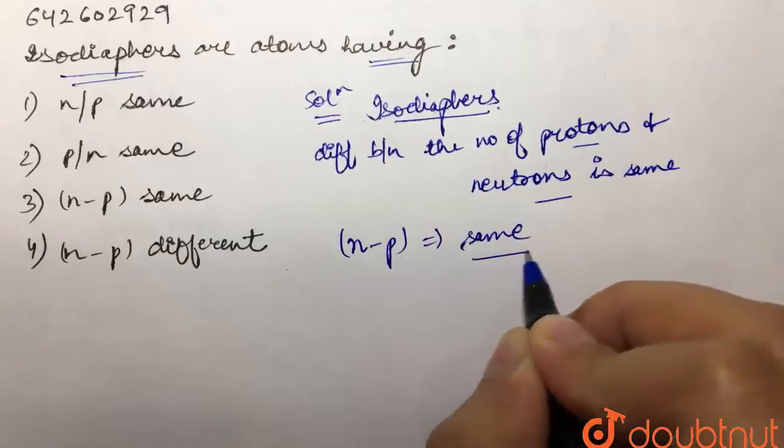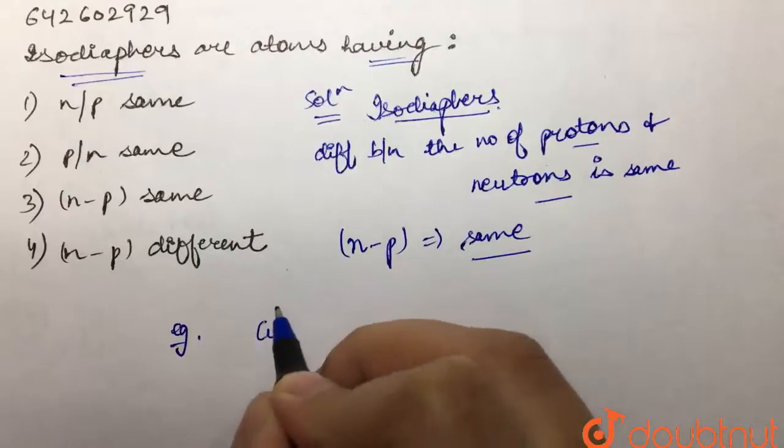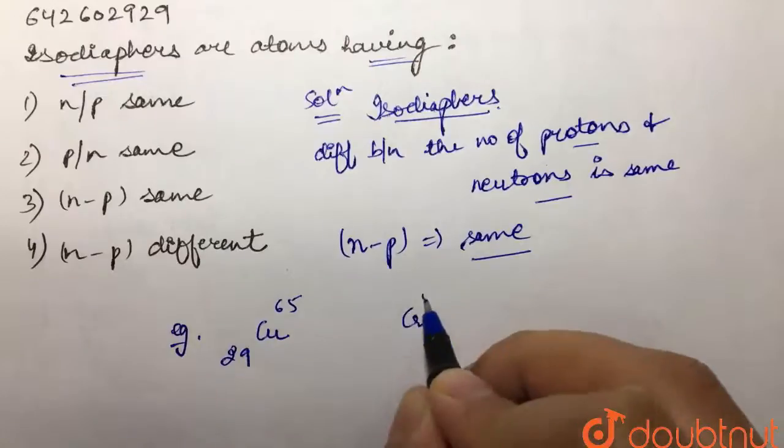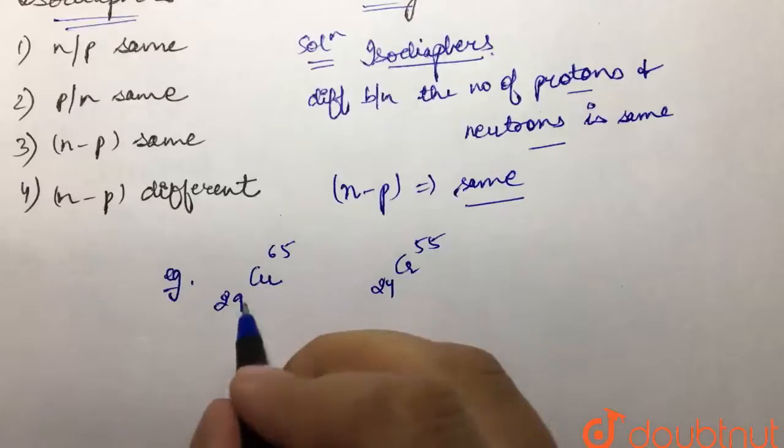And the example we can look at is copper 65-29 and chromium 55-24. How are they isodiaphors in this case?